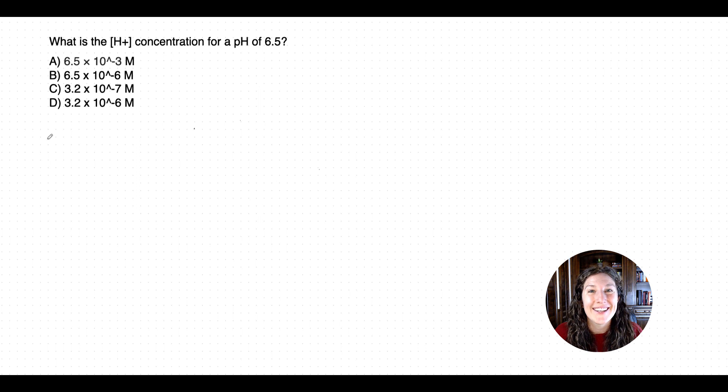In this question, we have a pH and we're asked for the H plus concentration and the pH is not an integer. So it's the same kind of rule of we have to deal with a non-1 mantissa, but we can use our principles that we talked about in the last problem. Go ahead, pause the video again, give this one a try on your own, and then we'll walk through it together.